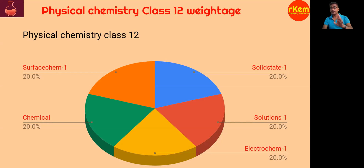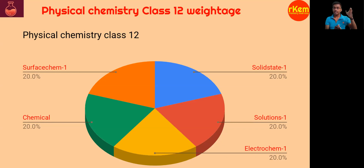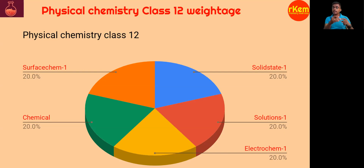Electrochemistry: Nernst equation and Faraday's laws — either Nernst equation or Faraday's laws, plus delta G = nFE(cell) — these concepts must be covered. Surface chemistry: adsorption or colloids — theory-based direct questions only. Chemical kinetics: one compulsory question on first-order and zero-order rate constants, direct or numerical. Total: 3 + 2 = 5 questions from physical chemistry class 12.